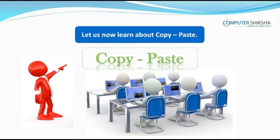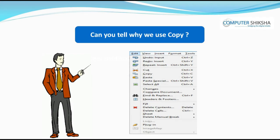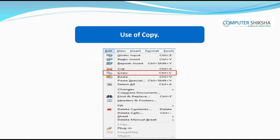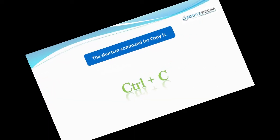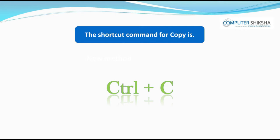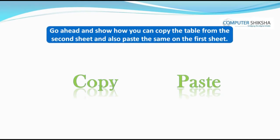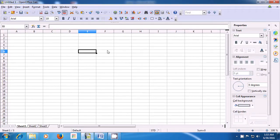Let us now learn about copy and paste. With the help of copy, we can get exact copies of any text or picture. The shortcut command for copy is Ctrl+C. To get the copies in your file, you will need to use the paste command. Go ahead and show how you can copy the table from the second sheet and paste it on the first sheet.